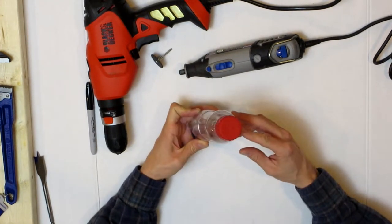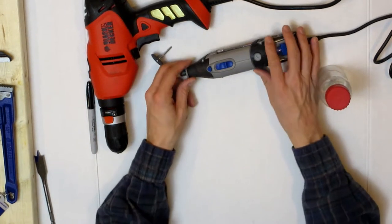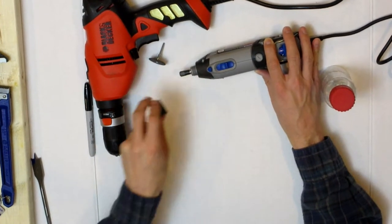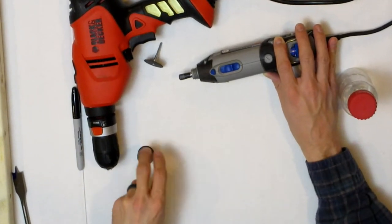What I've done here is I've found a bottle, it's actually from a container of Boost and it has this little bell shaped top which I think is going to work perfectly for a guard, so I thought I'd go ahead and make a new guard for my Dremel.